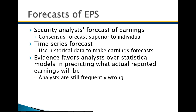For forecasting earnings per share, a consensus forecast is superior to an individual's forecast — so your whole team should be looking at and thinking about possible earnings per share. A time series forecast uses historical data to make earnings forecasts. If you have five years of financial statements, you can do a year-over-year trend and see that every year there's a 10–15% increase in earnings per share. That's likely what the company is engineering or targeting, making it a good estimate for next year as well. The more evidence you can gather, the better analysts will do over statistical models at predicting what will actually be reported.